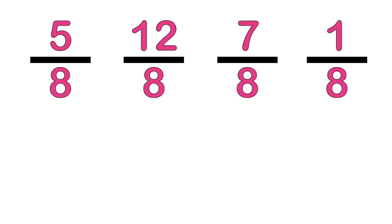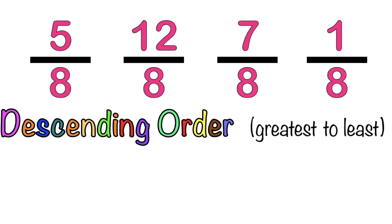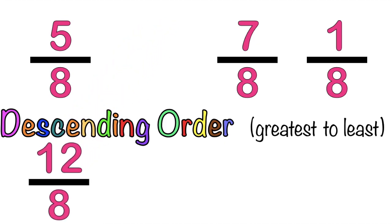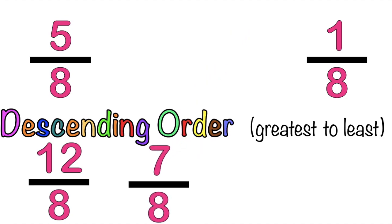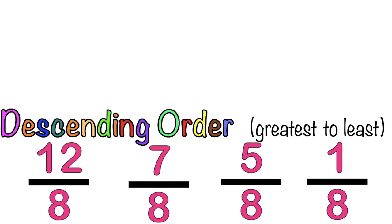How about if we have this one? Let's arrange this fraction in descending order. When you say descending order, that is from greatest to least or biggest to smallest. Which of these fractions is the biggest? It's 12-eighths. The next one is 7-eighths. The next one is 5-eighths. And lastly, we have 1-eighth. This fraction is arranged in descending order. When you say descending order, that is from greatest to least.